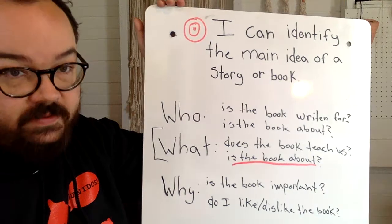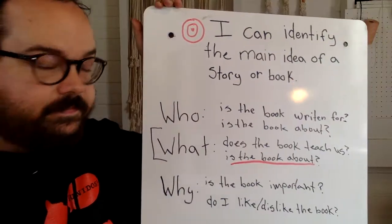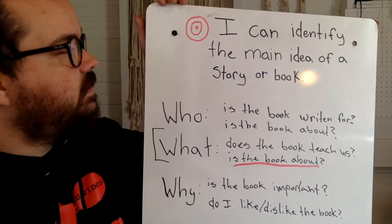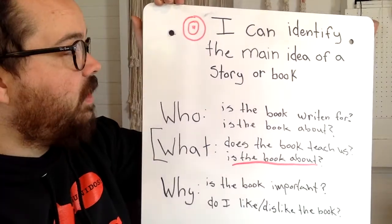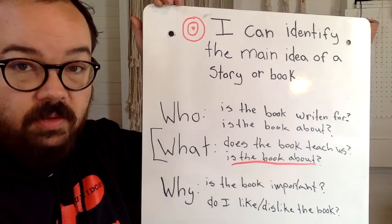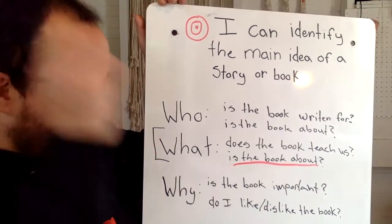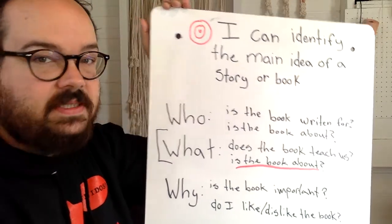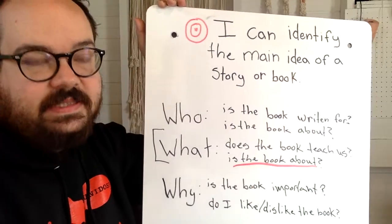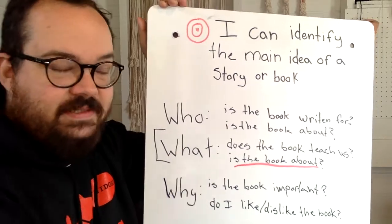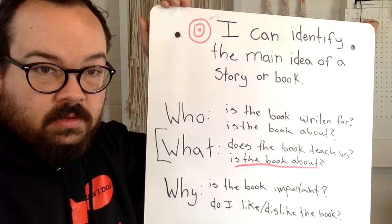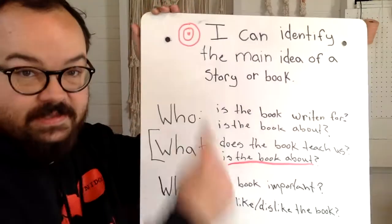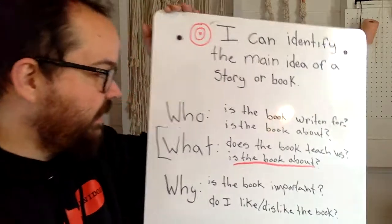But I want to talk about some very important things first. So mirrors on. I can identify the main idea of a story or a book. Mirrors off. Identify — that's a big word. Identify just means I can tell someone about it. I can say that is the main idea of this book. Like, I can identify the whiteboard and tell someone what it is.